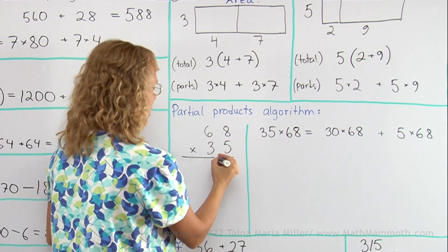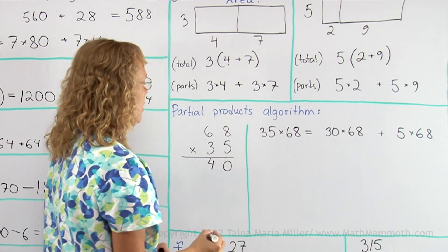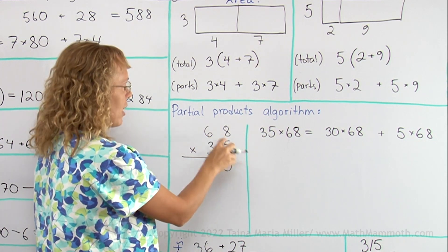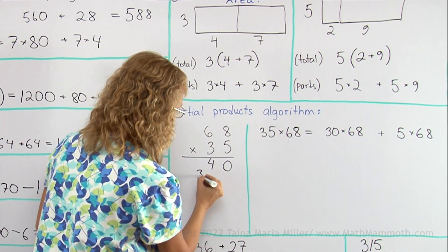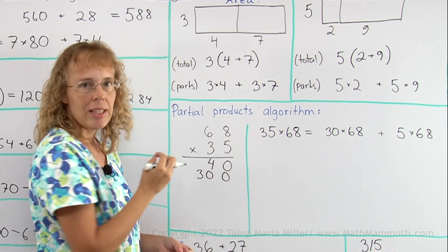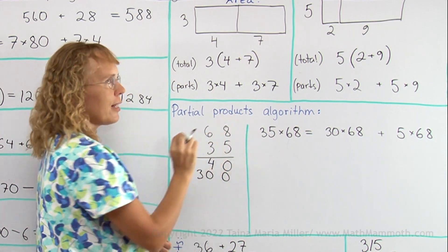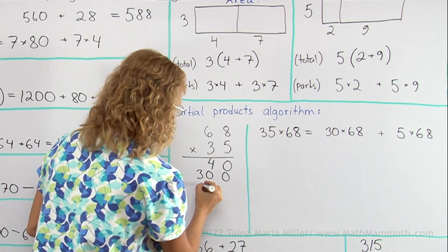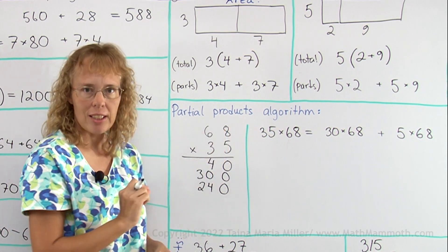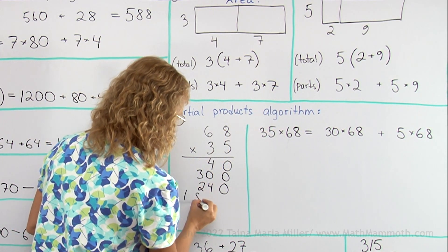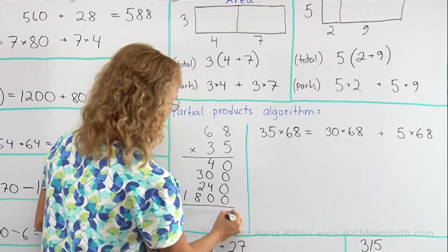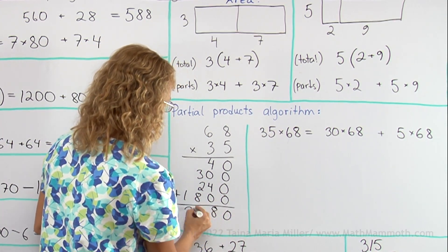I'll start here. 5 times 8 is 40. I'll write it here. Then I go 5 times this, which is 60. 5 times 60 is 300. Write it here. Then, this times this. The 3 means 30. So I will multiply 30 times 8. That's 240. And lastly, this times this, which means 30 times 60. So that's 1800. Then I add all my parts.